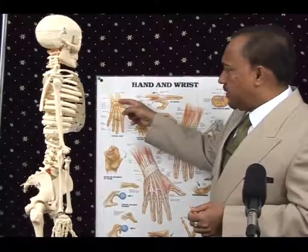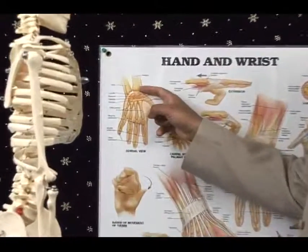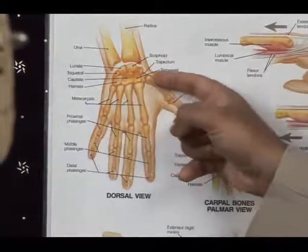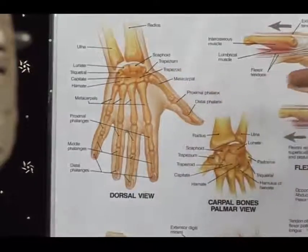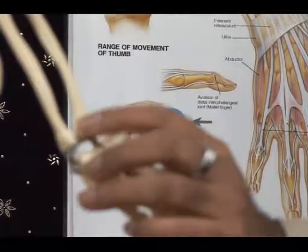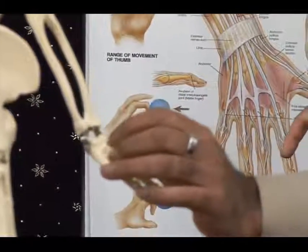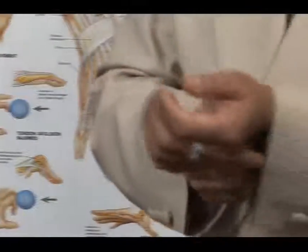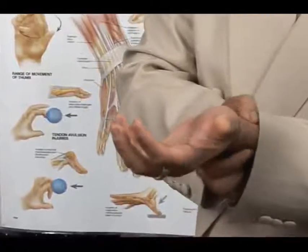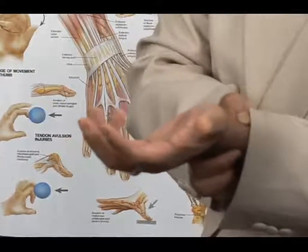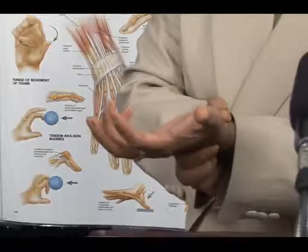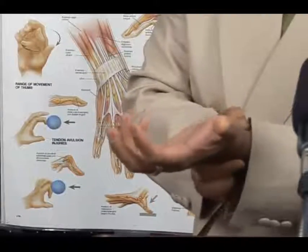The distal end of the radius and the ulna form the wrist joint, along with eight carpal bones. The scaphoid is the most commonly fractured — located at the proximal end near the distal radius — along with the Colles fracture of the distal radius. These are the two most commonly fractured bones in falls on an outstretched hand, which is the most common injury to the wrist joint.